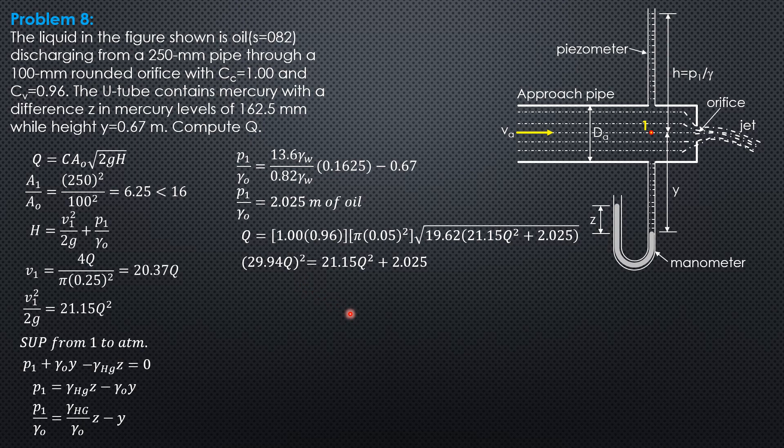Solving for Q: Q is square root of 2.025 divided by (29.94² - 21.15). So Q is 0.0481 cubic meters per second, or in liters per second times 1000, 48.10 liters per second. That's the answer to this problem.